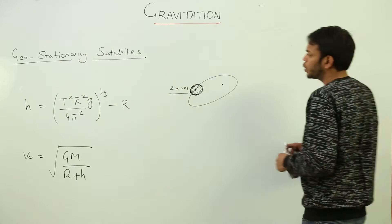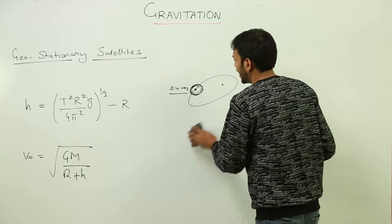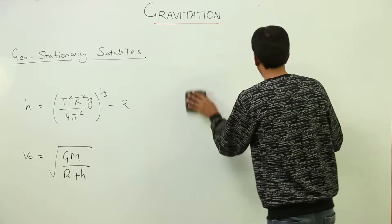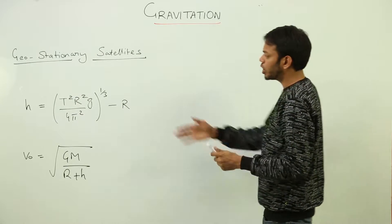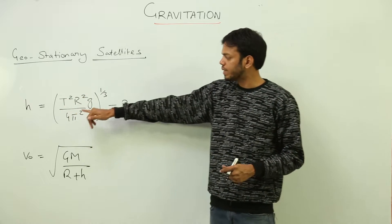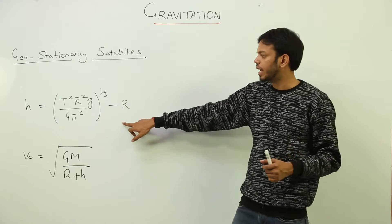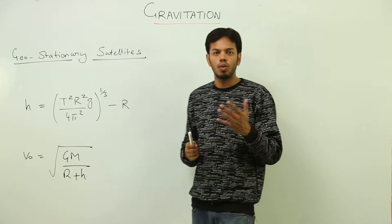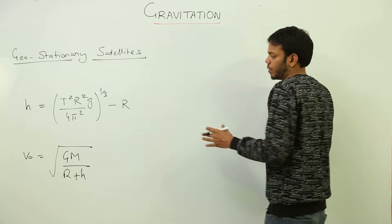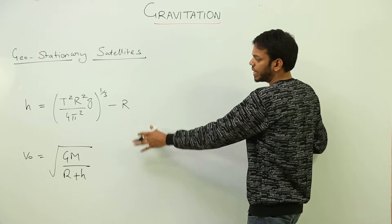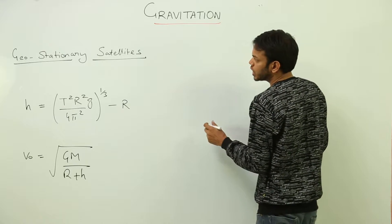Let's find out the necessary condition or the height at which such satellites can be projected. In the last class, we formulated a formula for height at which any satellite is projected. Now let's calculate the orbital height for geostationary satellites.